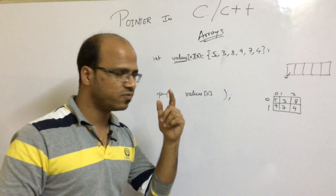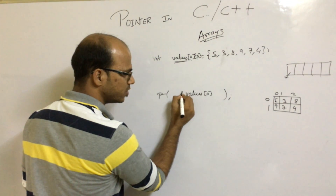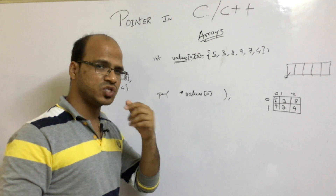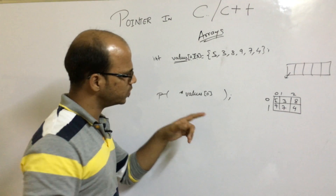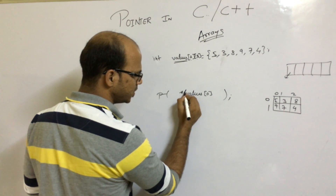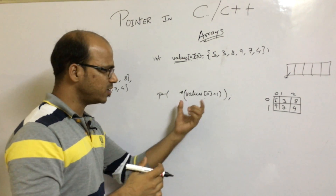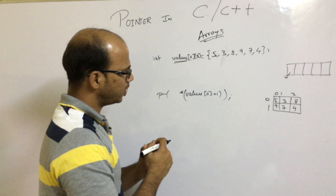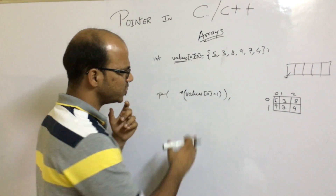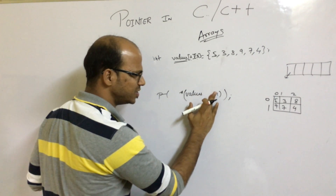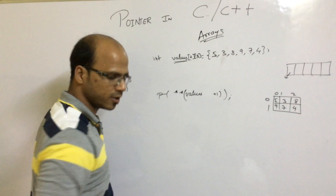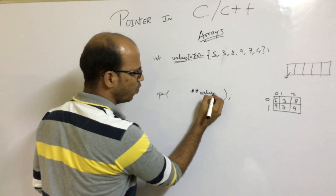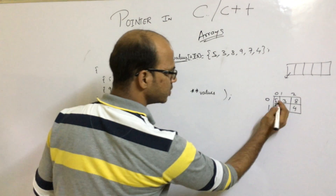If I only want the first element of a row, I add star — just like with single-dimensional arrays, star gives you the first value. So star values[0] gives five. To get the second value, you add plus one in brackets: star(values[0] + 1) gives the second column, which is three. And if you remove the array bracket entirely, you can use double star — star star values — which also gives you five.